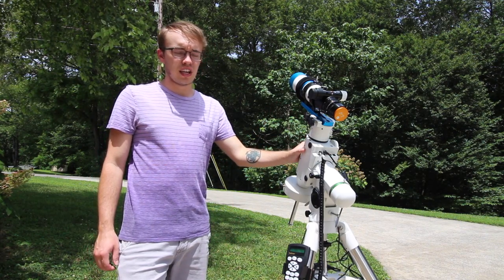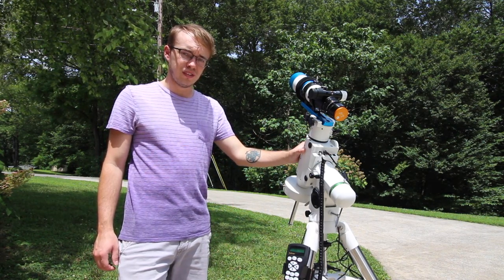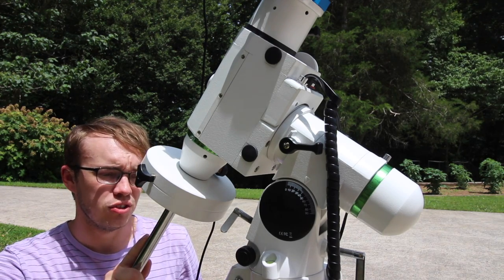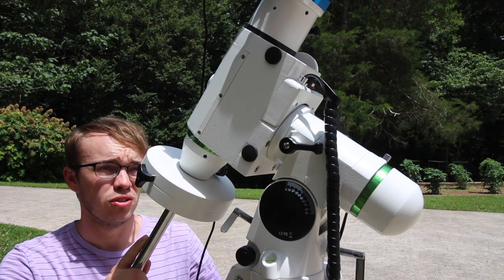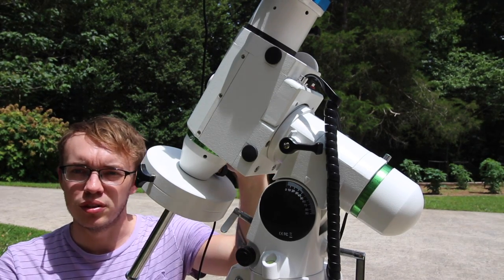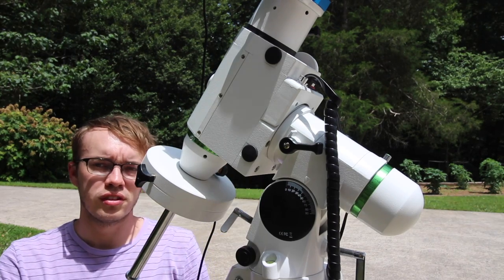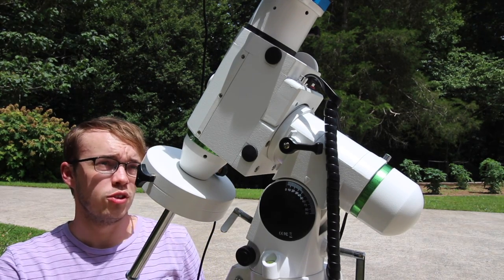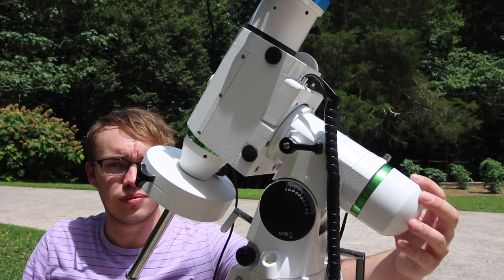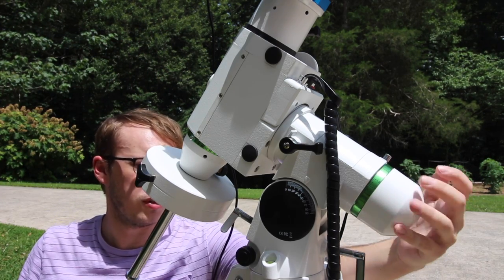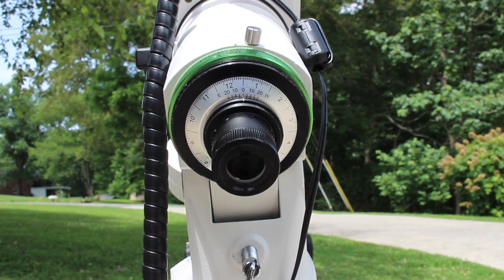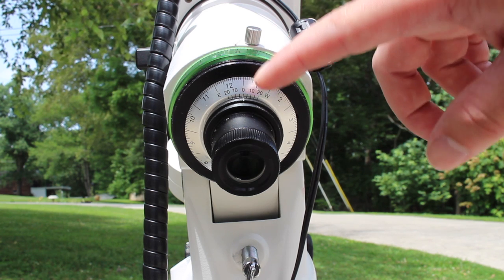Today I'll be using the Sky-Watcher HEQ5 Pro. Compared to the Sky-Watcher Star Adventurer, polar alignment on the HEQ5 Pro is much easier thanks to the better polar scope and built-in polar scope illuminator. To start the polar alignment process, you take out this little thing in the front and unscrew this cap off the back. One of the first things you'll notice are these dials right here.